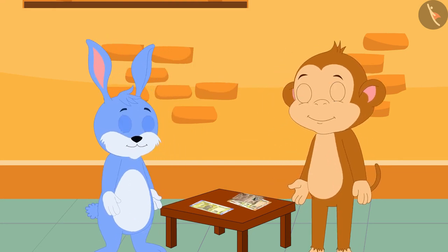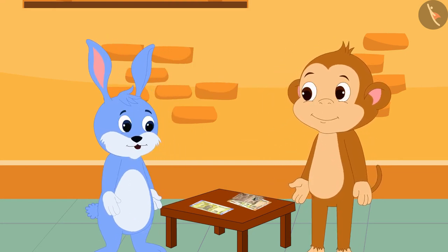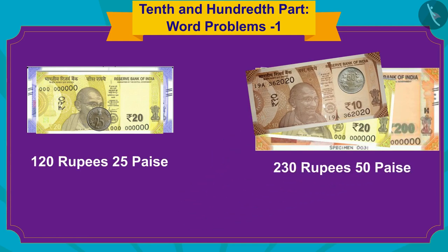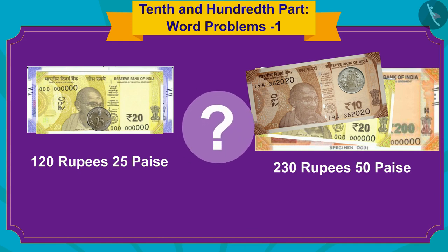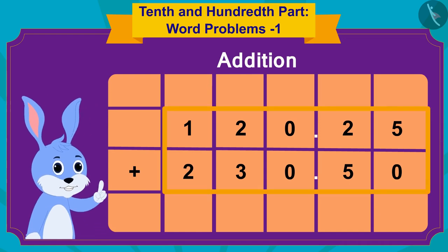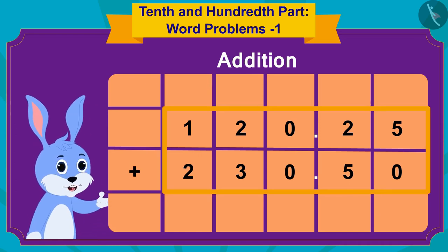Now Bunny is thinking: I have my 120 rupees 25 paise and Babban's 230 rupees 50 paise. How much money do I have in total? Bunny immediately wrote this addition on a paper: I will first do this addition like a simple addition.